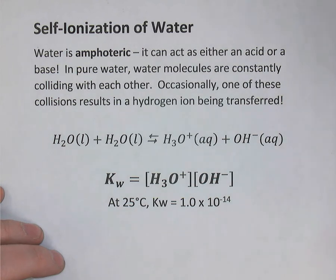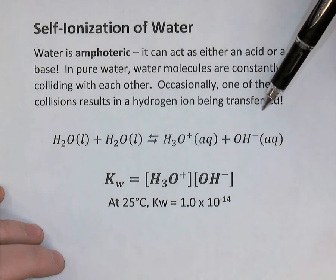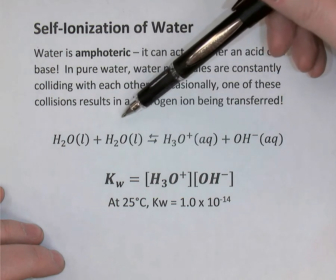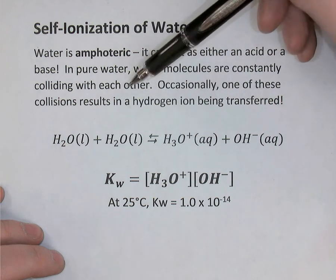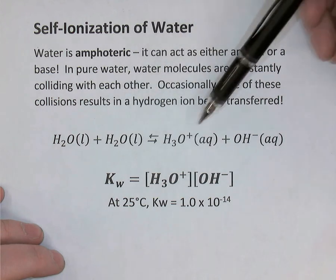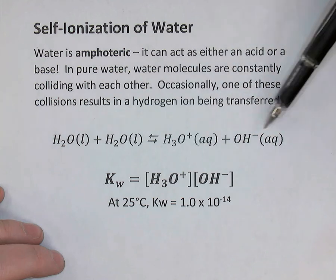We'll talk about how we know it happens rarely in just a moment. So we could write the reaction like this. Pause the video if you need to to write that balanced equation. So here I'm writing H2O liquid reacts with H2O liquid. If you prefer, you could just say two H2O liquids. And when they collide, they give me a hydronium ion, H3O positive, and a hydroxide ion, OH negative.